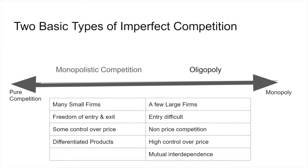In Canada, the airlines are a good example of monopolistic competition. If we fly anywhere, we're normally flying on one of three airlines: Air Canada, WestJet, or Porter. Relative to firms in the United States like Southwest or American Airlines, they're relatively small. There's lots of freedom of entry and exit — anyone can start an airline in Canada. And they have some degree of control over price, as you'll know if you've tried to buy a ticket lately.